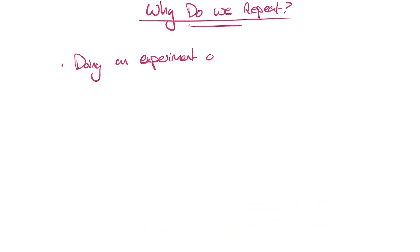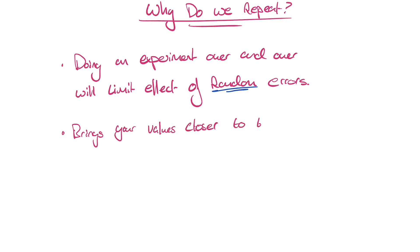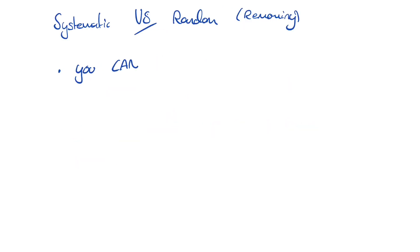We try to be as precise and accurate as we can when we do these experiments. So as to reduce random error as much as possible, we repeat the experiment. This brings the mean value closer to the true value as more repetitions are done. We can never fully get rid of random errors, but we can try and minimize the effect by repeating.